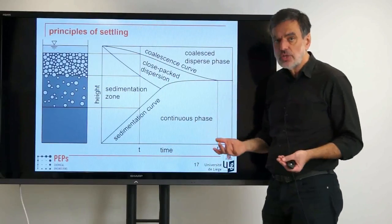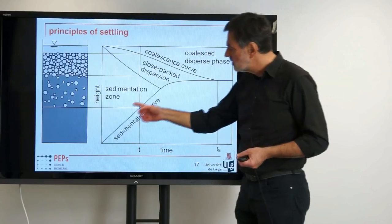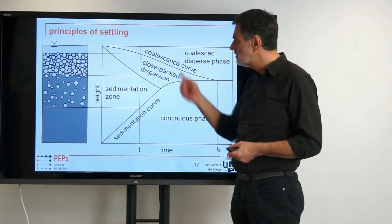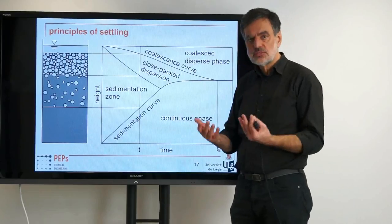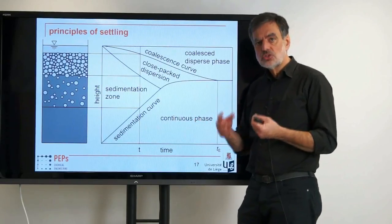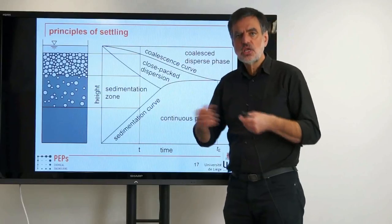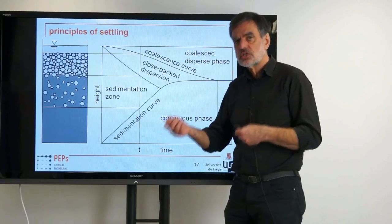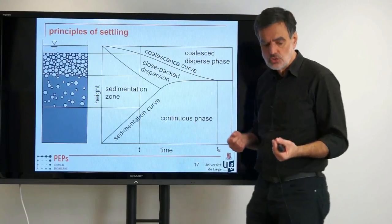If you plot these heights as a function of time, you get the so-called sedimentation curve and the so-called coalescence curve. We evaluate them in detail. From the sedimentation curve we determine the diameter of the drops, and from the coalescence curve we determine a coalescence parameter. With the help of these data, we are then able to predict how a settler works and, in turn, design the settler — we can say how big it should be.